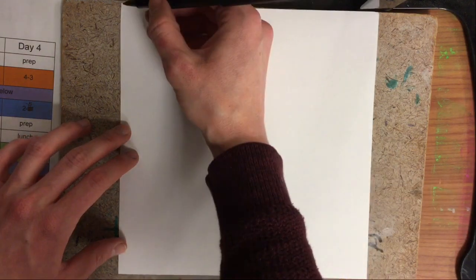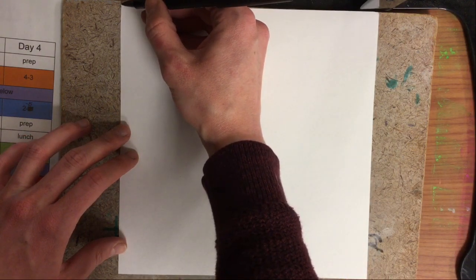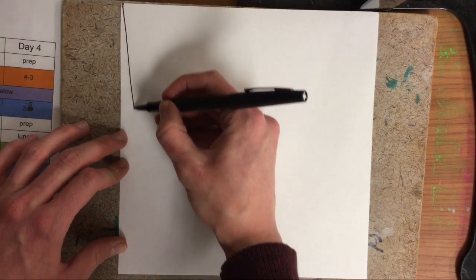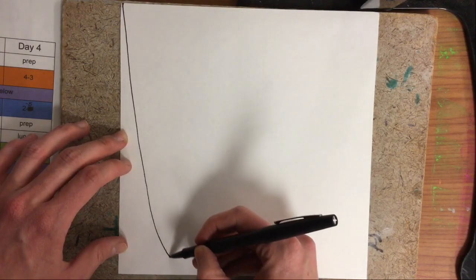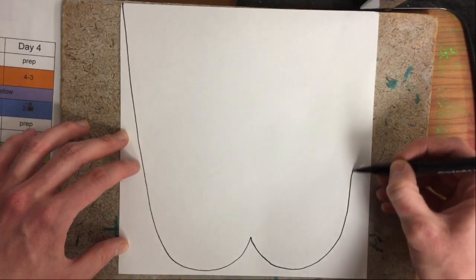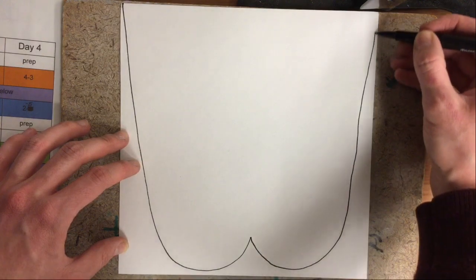First we're going to make a big line that starts in the top corner, curves down, does a bump, bump, and then goes right back up to the other corner.